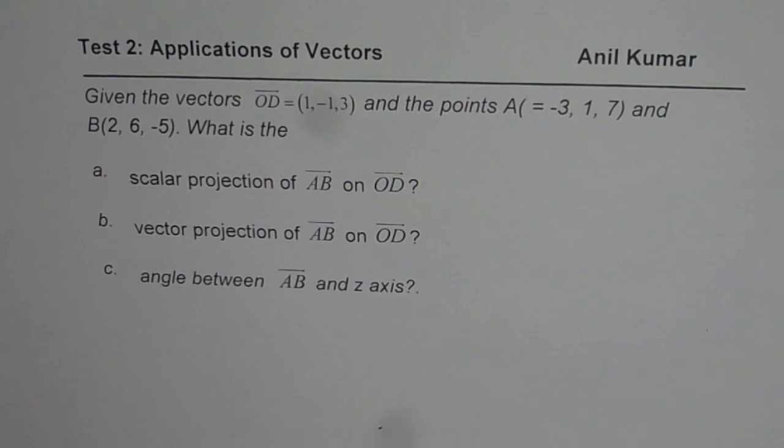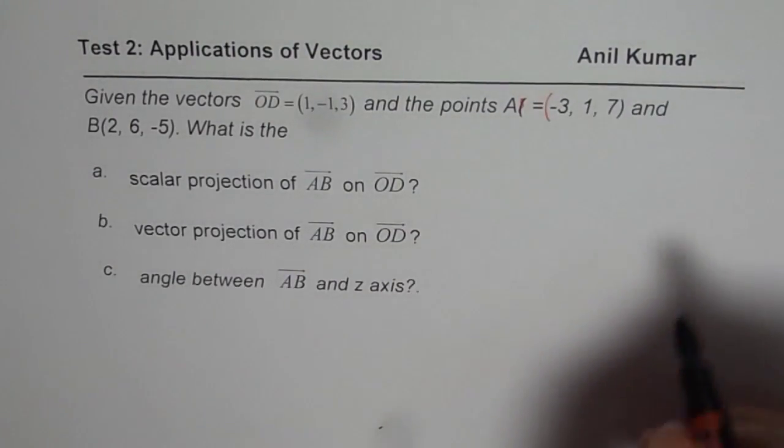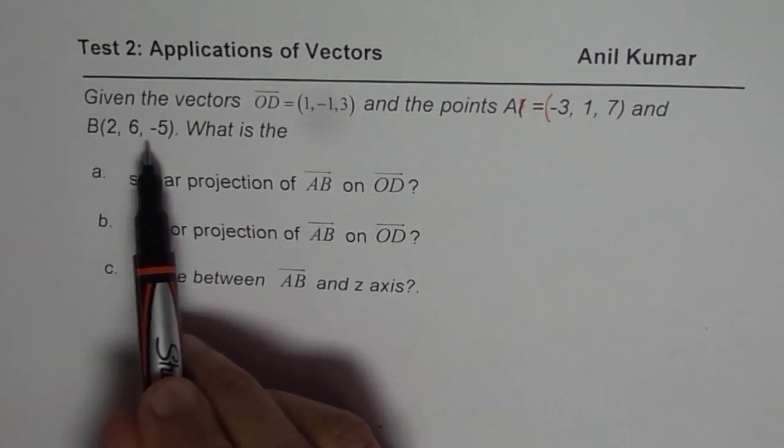Given the vectors OD and points A which is equal to (-3, 1, 7) and points B which is (2, 6, -5),